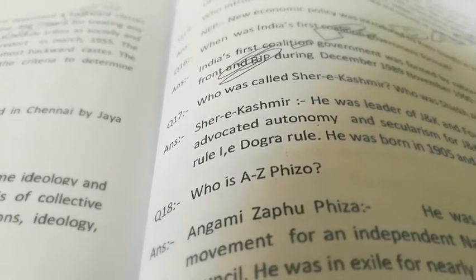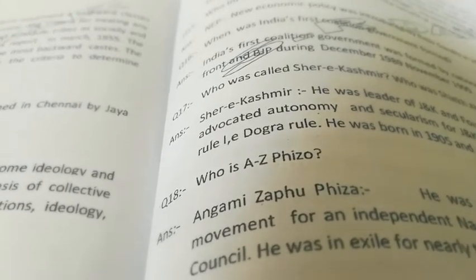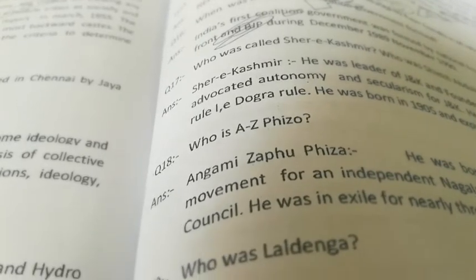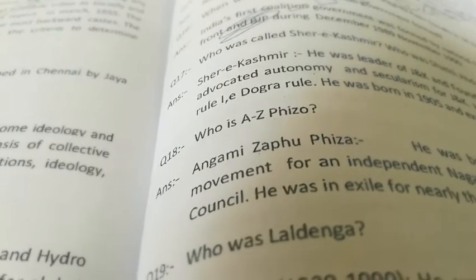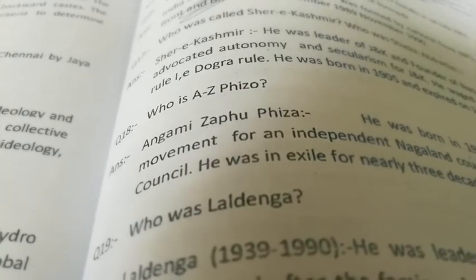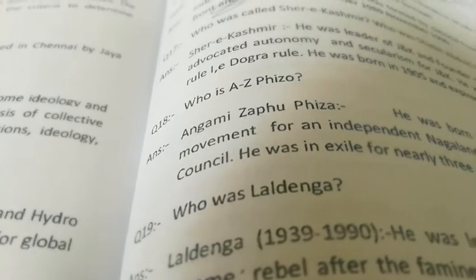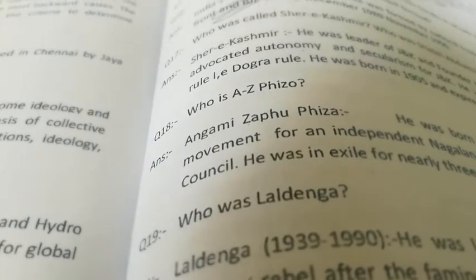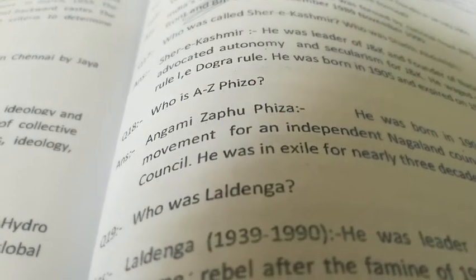Who was called Sher-e-Kashmir, or who was Sheikh Mohammed Abdullah? Sheikh Mohammed Abdullah was leader of Jammu and Kashmir and founder of the National Conference in 1938. He advocated autonomy and secularism for J&K. He waged a struggle against the princely rule, i.e., the Dogra rule. He was born in 1905 and expired in 1982.